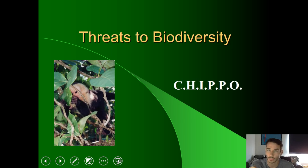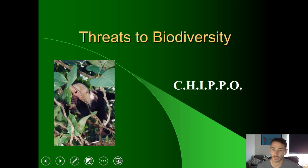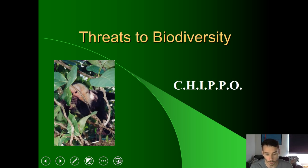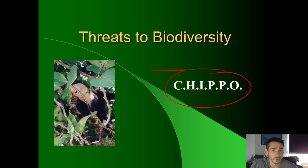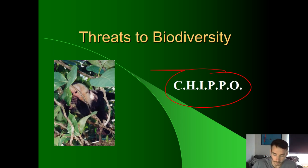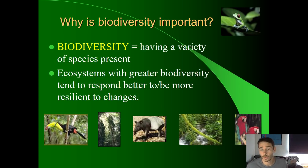Today we're doing a pretty short little video lecture on biodiversity, but more specifically what are the kinds of threats to biodiversity — things that are going to decrease biodiversity in some way. We'll go through the different threats using this acronym right here: CHIPPO. Each letter stands for one of the six main threats that lead to a decrease in biodiversity. But first, let's quickly refresh our memories on why biodiversity is so important and what it is.